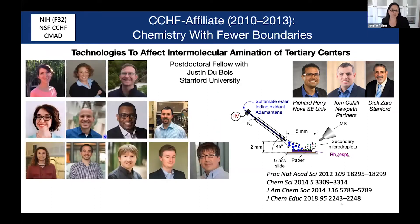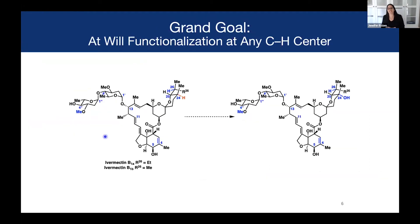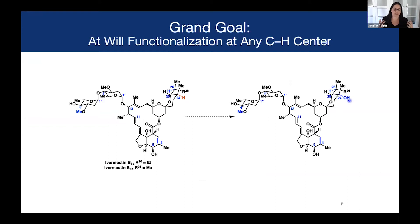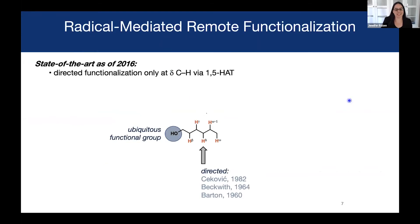That tells you a lot about where the center was then and where it is now, and how much these technologies have evolved. It was the beginning of breaking down boundaries within chemistry for me. The grand goal of the center is to be able to functionalize any CH bond in a molecule as complex as ivermectin, an antiparasitic agent — for example, replacing a carbon–hydrogen bond at C24 with a carbon–oxygen bond, which is something that P450s do in nature. The goal in my lab is to contribute to this grand goal, specifically by carrying out radical-mediated processes that allow for directed functionalization.